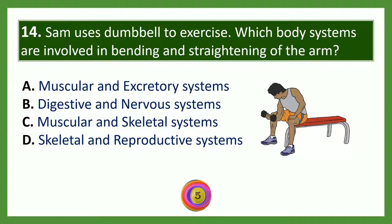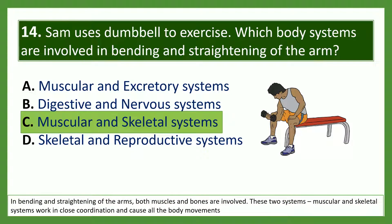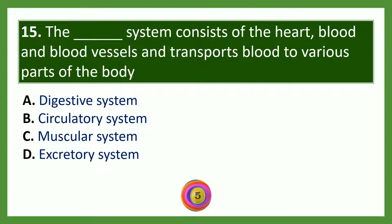Sam uses a dumbbell to exercise. Which body systems are involved in bending and straightening of the arm? Option A — muscular and excretory systems; option B — digestive and nervous systems; option C — muscular and skeletal systems; option D — skeletal and reproductive systems. The answer is muscular and skeletal systems. In bending and straightening of the arms, both muscles and bones are involved. These two systems work in close coordination and cause all body movements.